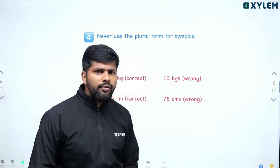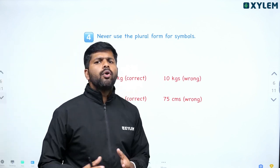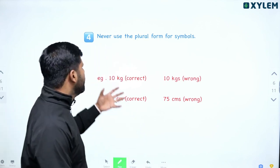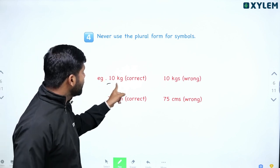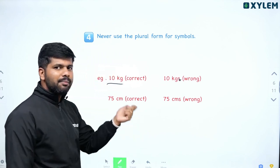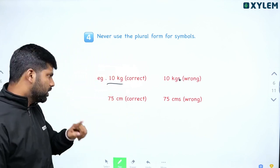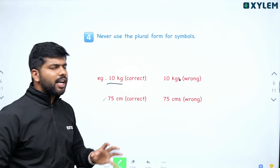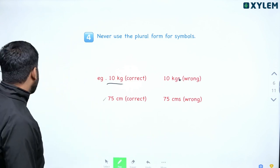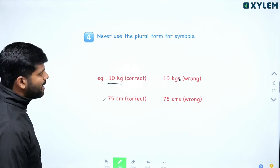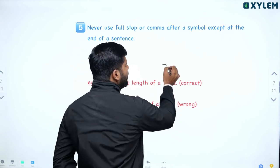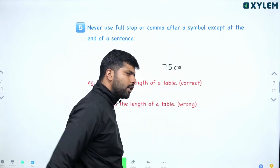Never use plural form symbols. Never use plural form symbols. For example, never write '75 centimeters' as 'cms'. There is a correct way to write this. The correct form does not use a plural — so '75 cm' is correct, not '75 cms'.